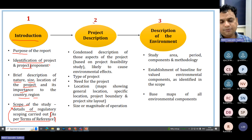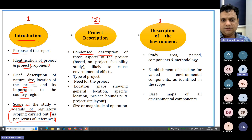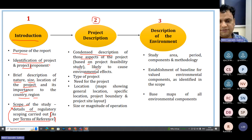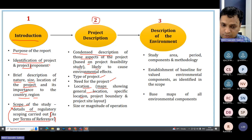Chapter 2 will be project description. Here you have to solely write about the description of the project — how aspects of the project based on feasibility study are likely to cause environmental effects, the type of project, need for the project, its location, various maps showing general and specific location, boundary of the project, project site layout, and size or magnitude of operation.